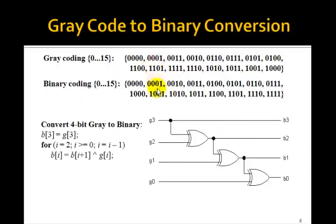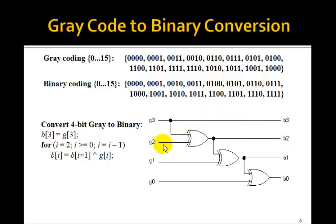Here we have a 4-bit gray coding and the corresponding 4-bit binary coding. This is our pseudo code for converting 4-bit gray to binary: B3 gets G3, and then for i equal 2, i greater than or equal to 0, i equals i minus 1, B_i is B_(i+1) exclusive-OR with G_i. Notice how this is a little different than the binary-to-gray code — here B2 gets B3 XOR G2, B1 gets B2 XOR G1, and B0 gets B1 XOR G0. One of the inputs to these exclusive-OR gates is a previous result. So this circuit involving these three exclusive-OR gates will produce a gray code to binary conversion.